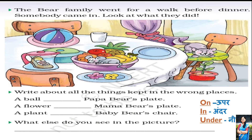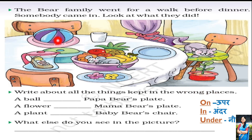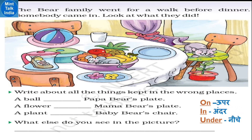Uske baad hum fill in the blanks karenge. Sabse pehle aapko is photograph ko achhe se dekhna hai - kya kuch garbad nazar aa rahi hai? Plate ke upar ball, jug ke andar juta, plate ke upar phool, fruit bowl mein ek chuha bhi hai, aur kursi ke upar ek billi hai. Lagta hai in dono ne milke bahut garbadiyaan machai hain. Write about all the things kept in the wrong place. Aasaan karne ke liye: upar ka matlab 'on', andar ka matlab 'in' ya 'inside', neeche ka matlab 'under'. Ball kahan pe hai? Plate ke upar - toh likhenge: A ball is on papa bear's plate.